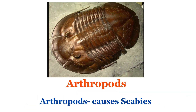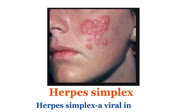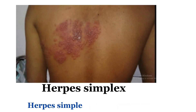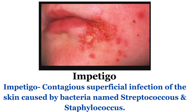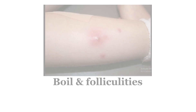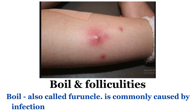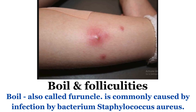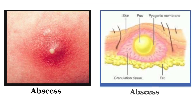Arthropods cause scabies. Herpes simplex is a viral infection. Impetigo is a contagious superficial infection of the skin caused by bacteria named Streptococcus and Staphylococcus. Boil, also called furuncle, is commonly caused by infection by bacterium Staphylococcus aureus.